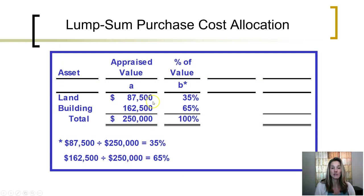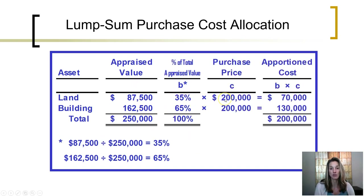The simple way to do it is to add up the total appraised value of all assets purchased. The total appraised value is $250,000. The percentage attributable to land is $87,500 divided by $250,000, or 35%. Buildings is $162,500 of $250,000, or 65%. We allocate 35% of the $200,000 purchase price to land, which is $70,000, and 65% to building, which is $130,000. The journal entry is to debit land for $70,000, debit building for $130,000, and credit cash for $200,000.